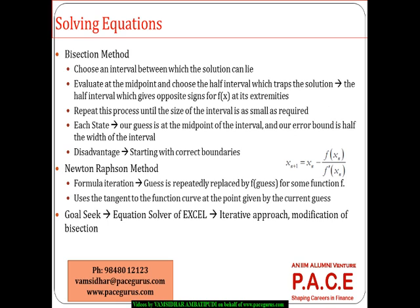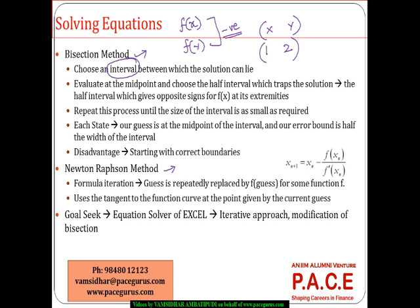When looking at solving equations, the most common method is the bisection method, but an improved method is the Newton-Raphson method. The bisection method always starts with an interval — it needs a starting point x and y — chosen in such a way that f(x) and f(y) have opposite signs. The interval is chosen so that the function values at the extremities have opposite signs.